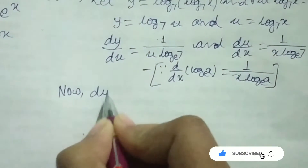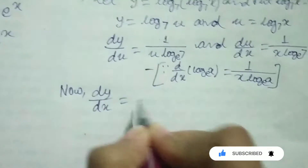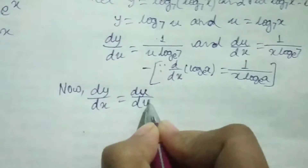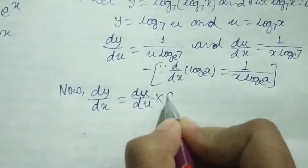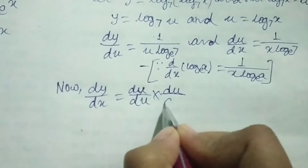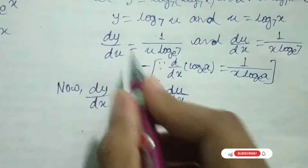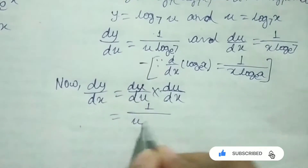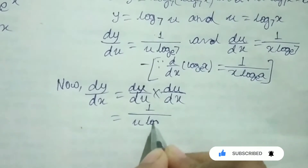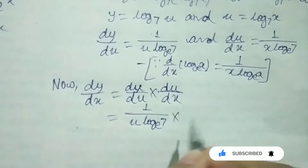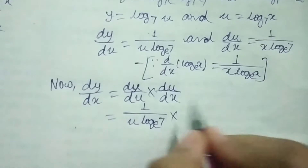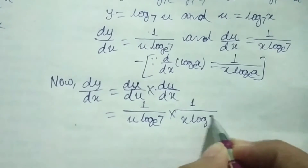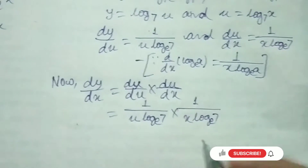We have to find differentiation of y with respect to x. So, differentiation of y with respect to x equals differentiation of y with respect to u into differentiation of u with respect to x, which is 1 upon u log 7 base e into 1 upon x log 7 base e.